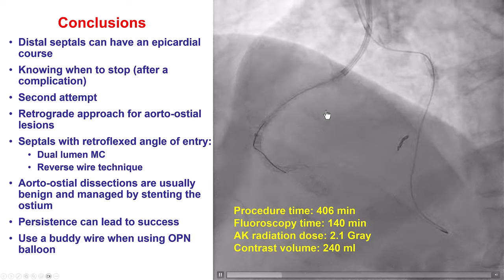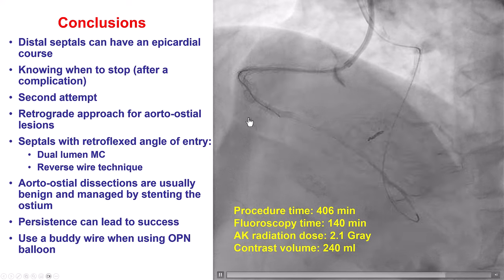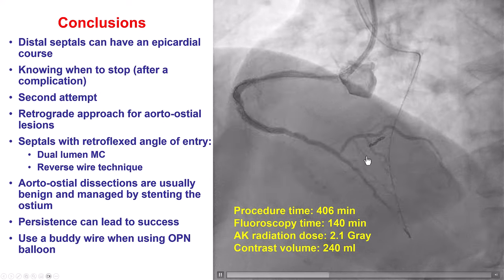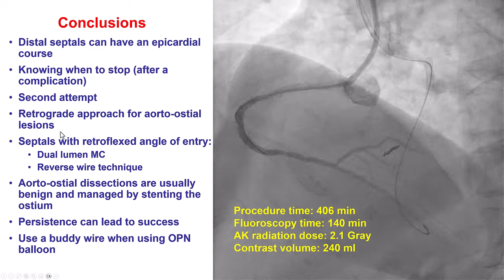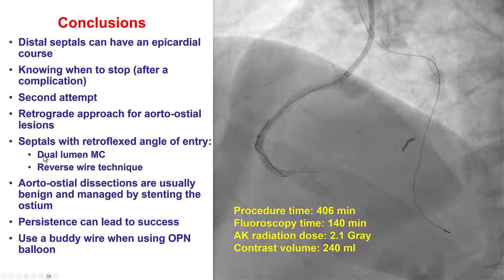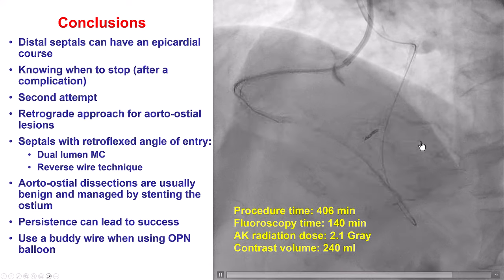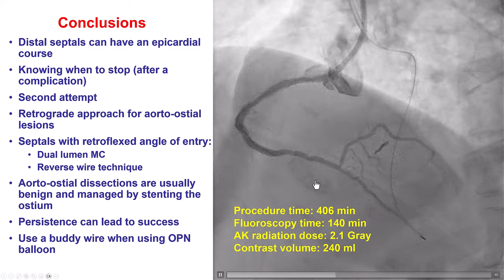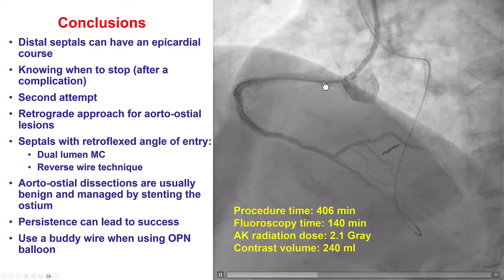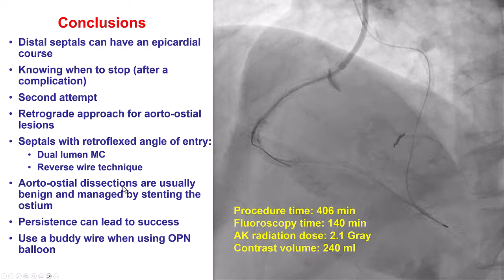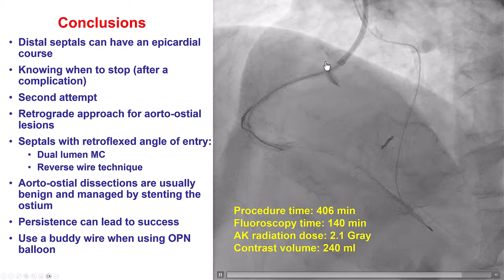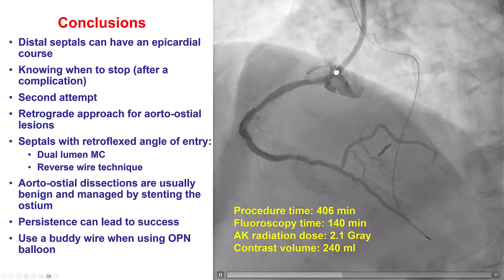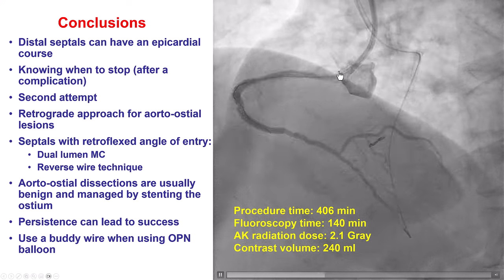In the second attempt, we knew we had difficulty advancing equipment antegrade — we tried again but failed. We also had difficulty entering the septal branch that was connecting. What helped was using a dual-lumen microcatheter and leaving a guide wire in the non-appropriate septal as a marker of where not to go. We had an aortocoronary dissection when we performed the retrograde Carlino technique; however, after stenting, this was covered and the smaller residual dissection will heal on its own. Dissections like this do not require any special treatment.